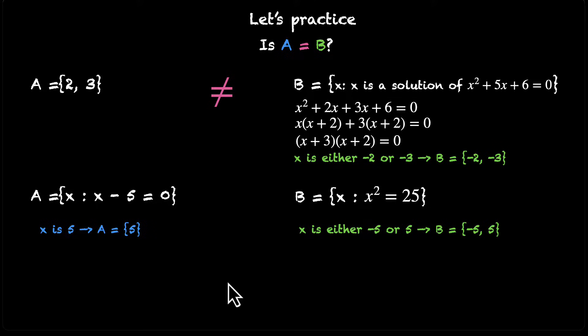So are these two equal? Think about it. Whatever you have here, you also have here. But what you have here, which is -5, you don't have here. These two sets don't have the exact same elements. -5 is missing from set A. This means that these two sets are not equal.